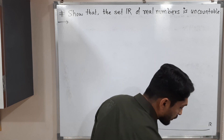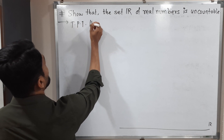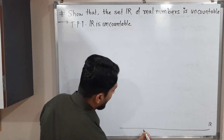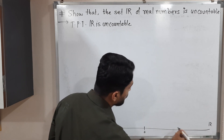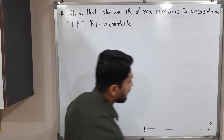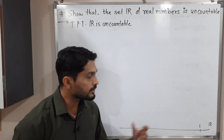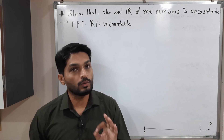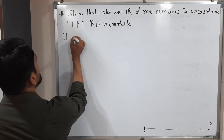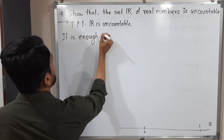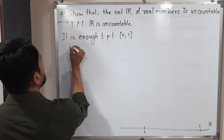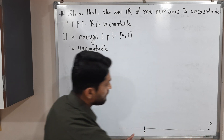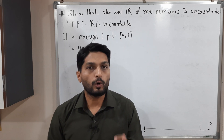We have to prove that R is uncountable. It is enough to prove that the closed interval [0,1] is uncountable. In R we have zero in the middle, and 1, 2, 3, 4 on the right. If a proper subset of any bigger set is uncountable, obviously the larger set is also uncountable. So it is enough to prove that closed interval [0,1] is uncountable, since it is a proper subset of R.